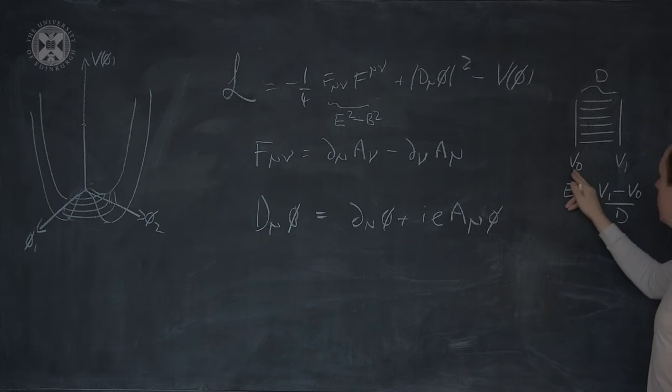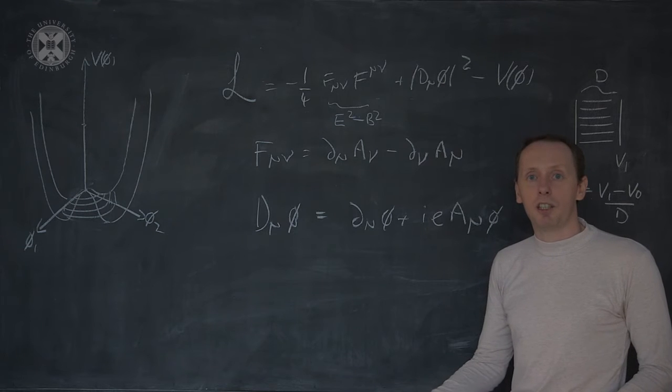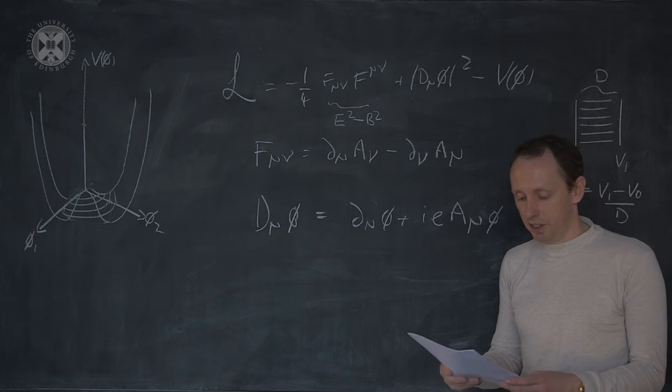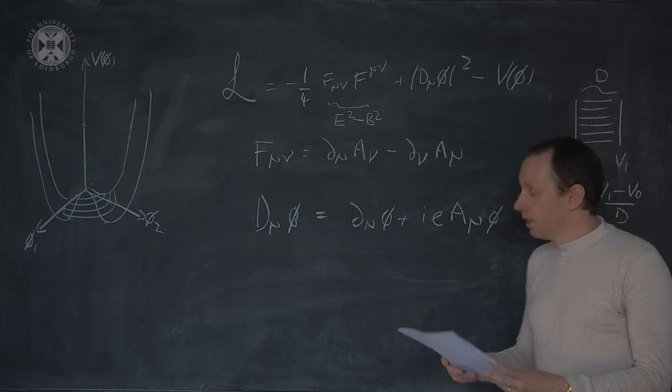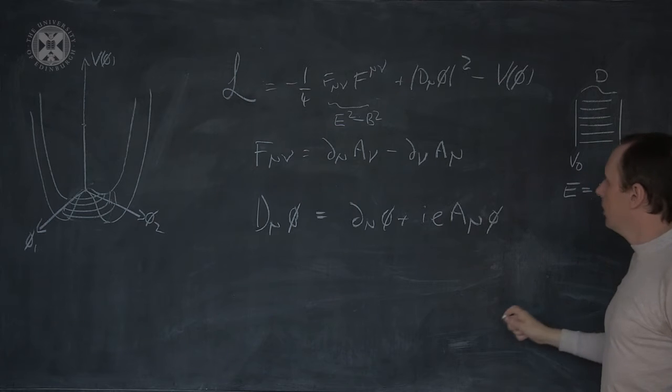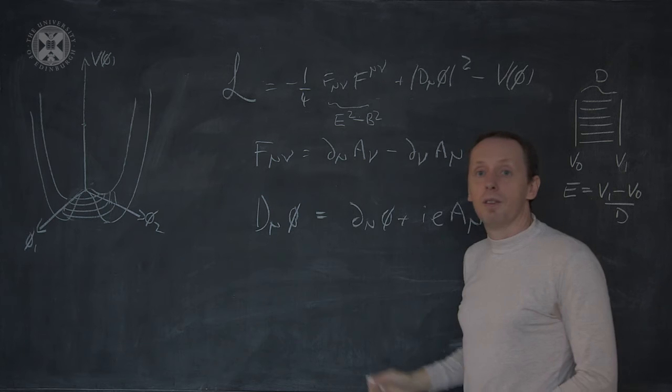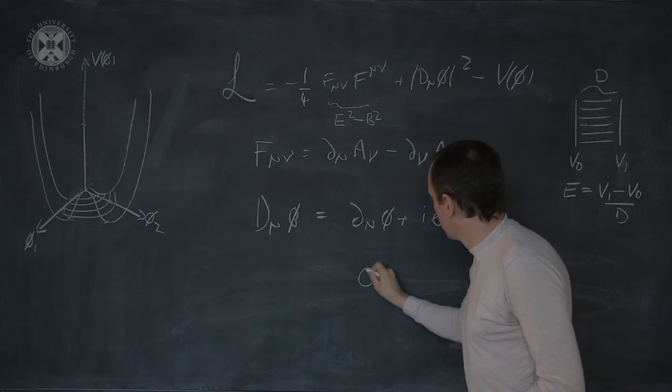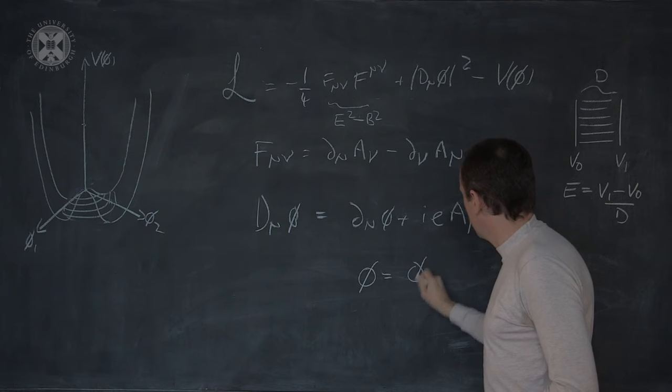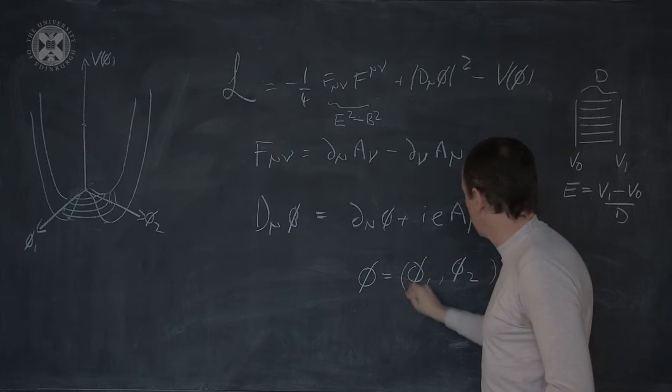Note that V0 is arbitrary. That is, we can add a constant to electrostatic potential without changing any physics. D mu phi squared. Here, phi is a scalar complex field. That means it has two components. Phi equals phi 1, phi 2.